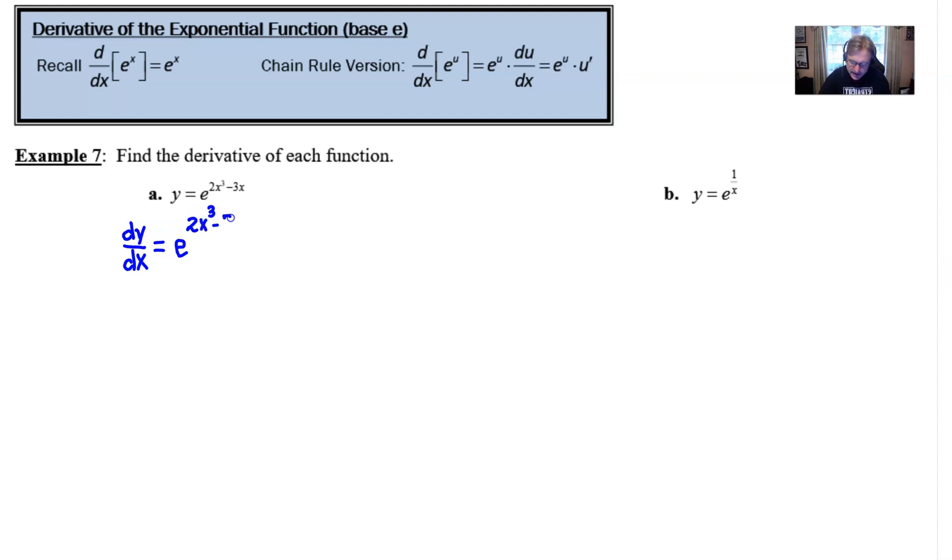...you would start with e to that power. Nothing changes. We have that same exponent. And then we would simply multiply by the derivative of that exponent. Now this derivative is going to consist of two terms.